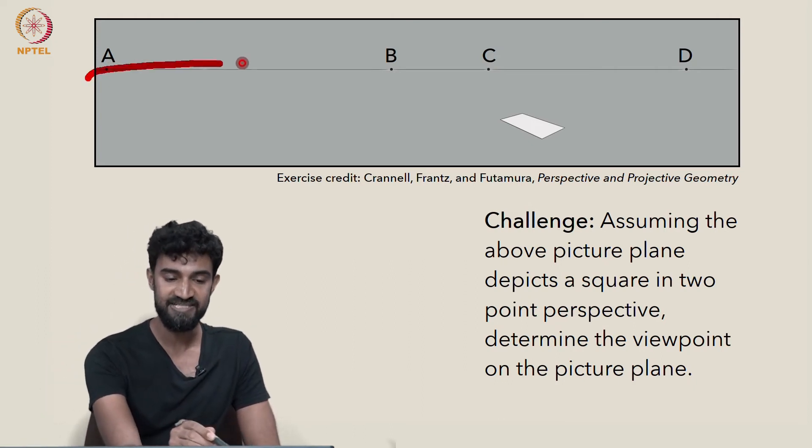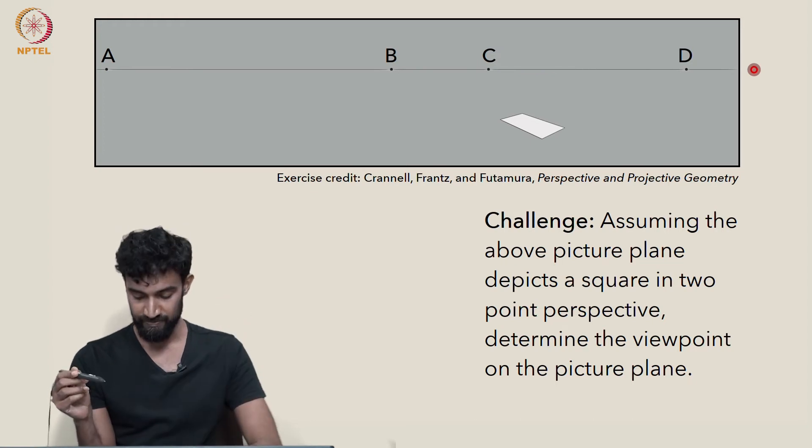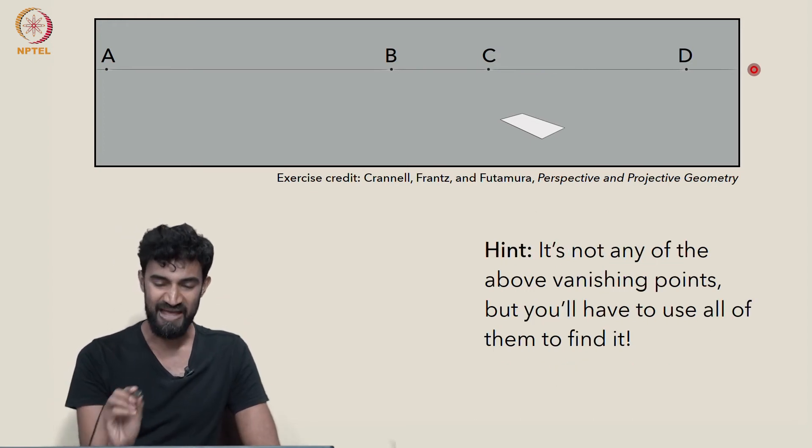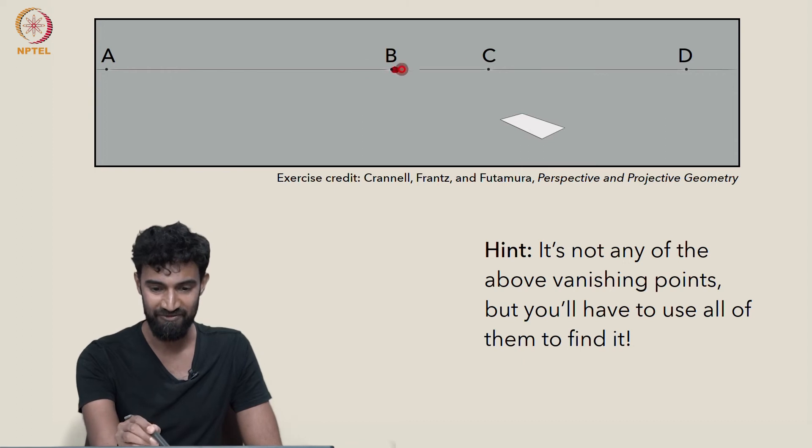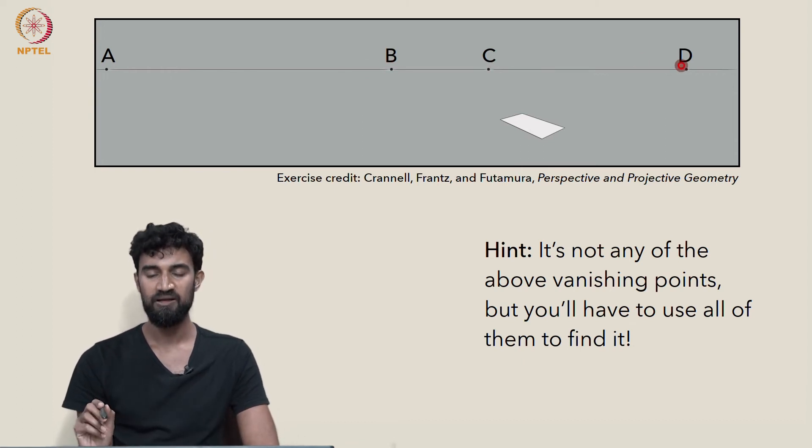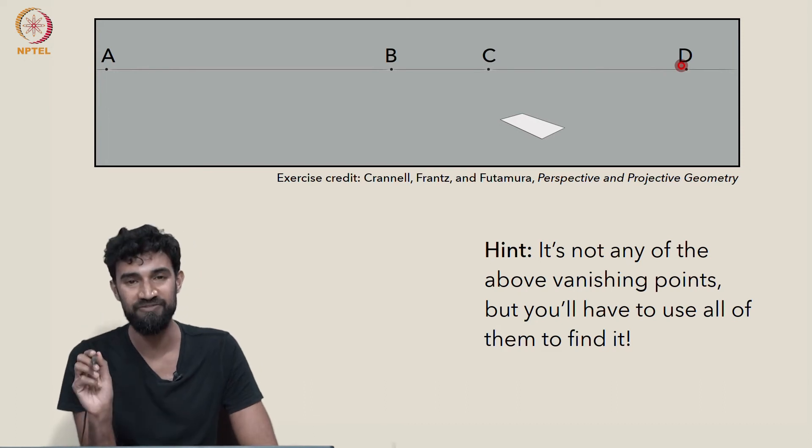So using all this information the viewpoint on the picture plane can be determined. It's going to have to lie somewhere along the horizon line, because that's the eye level. But as a hint, it's not any of the above vanishing points. It's not A or B or C or D. But you're going to have to use all of them to find it.